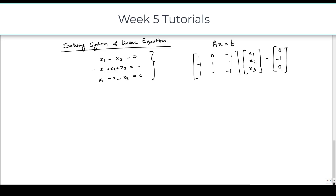Our augmented matrix will be: 1, 0, minus 1; minus 1, 1, 1; 1, minus 1, minus 1, with the last column being 0, minus 1, 0. So this is our augmented matrix.